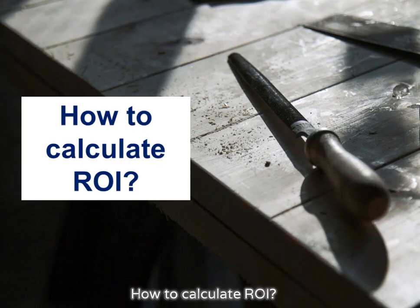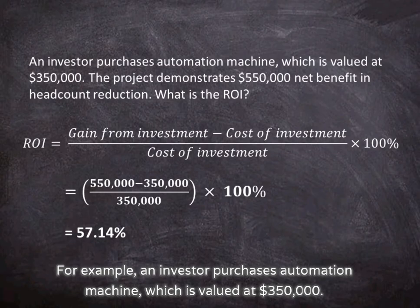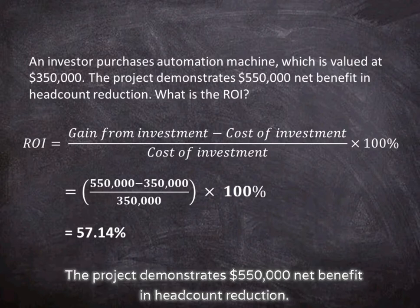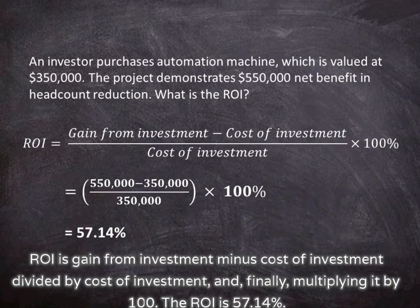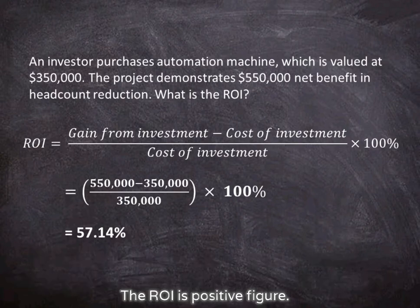How to calculate ROI? For example, an investor purchases an automation machine valued at $350,000. The project demonstrates $550,000 net benefit in headcount reduction. What is the ROI? ROI is gain from investment minus cost of investment, divided by cost of investment, and finally multiplied by 100. The ROI is 57.14%, which is a positive figure.